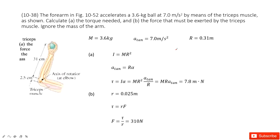In this problem, you can see we have the arm — this is the forearm. This person carries a ball. The first part asks us to find the torque needed. So when we want to find the torque, we see what is given.